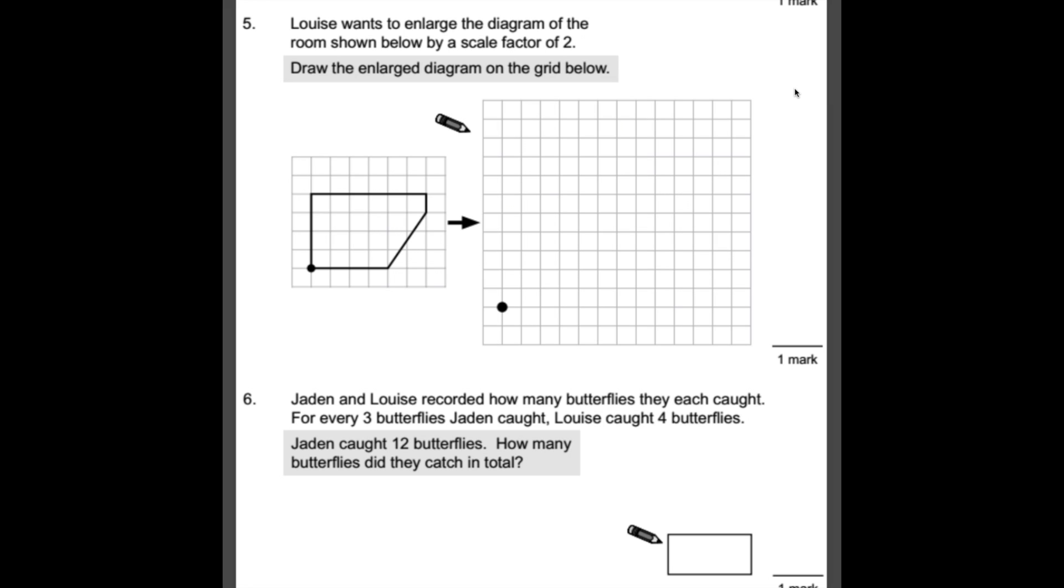Number 5, Louise wants to enlarge the diagram of the room shown below by a scale factor of 2. Draw the enlarged diagram on the grid below. All that means is if we're multiplying something by a scale factor of 2 is we are literally just doubling all the sides. We're timesing every side by 2. So if you look at this side on the left, it's 4 at the moment. So if we times that by 2, it's going to be 8 long. Now obviously you're going to use a ruler for this, but because I'm doing this on the computer, I haven't got that possibility. So I'm going to just do it as best as I can, but bear with me because it may be a little bit more messy than what yours should be. Okay, there you go. That's my example there for you without a ruler.